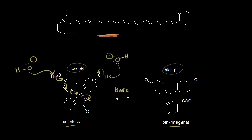Following the electrons: the magenta electrons move into here, the blue electrons move into here, the green electrons move into here, and finally the red electrons move off onto this oxygen, giving that oxygen a negative one formal charge. And if this hydroxide anion takes this proton, then these electrons end up on the other oxygen, also giving it a negative one formal charge. So we form an ion here, and this ion has a pink or magenta color.